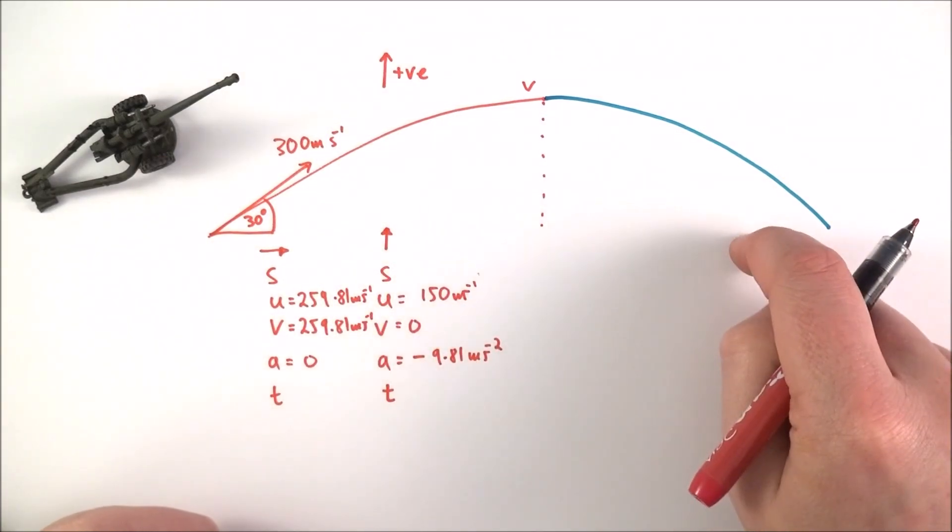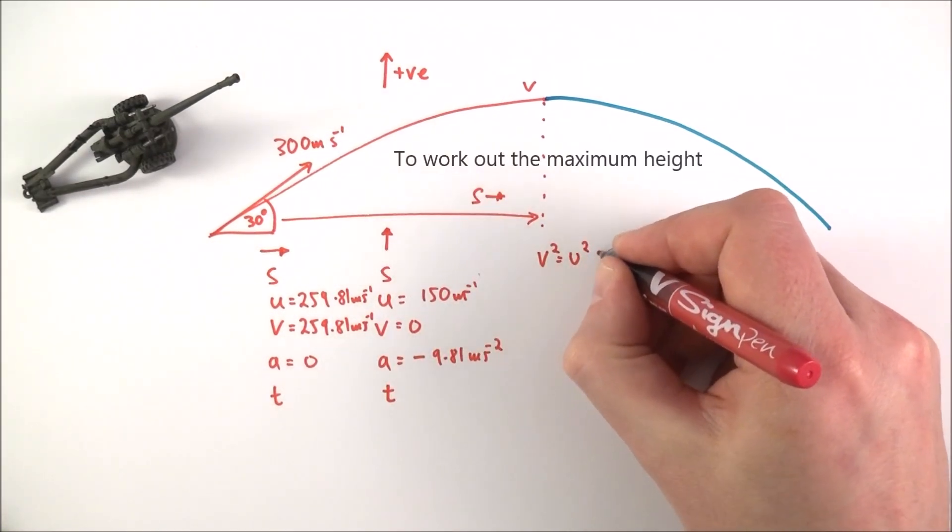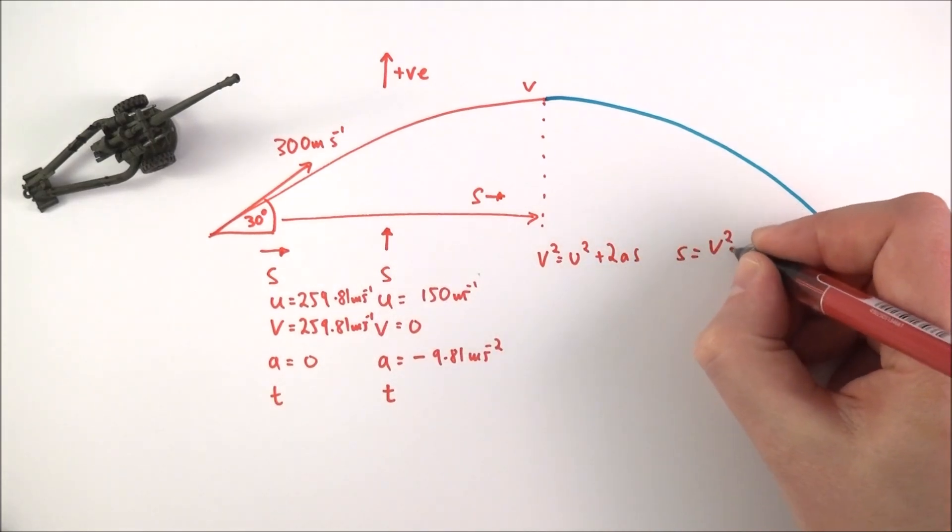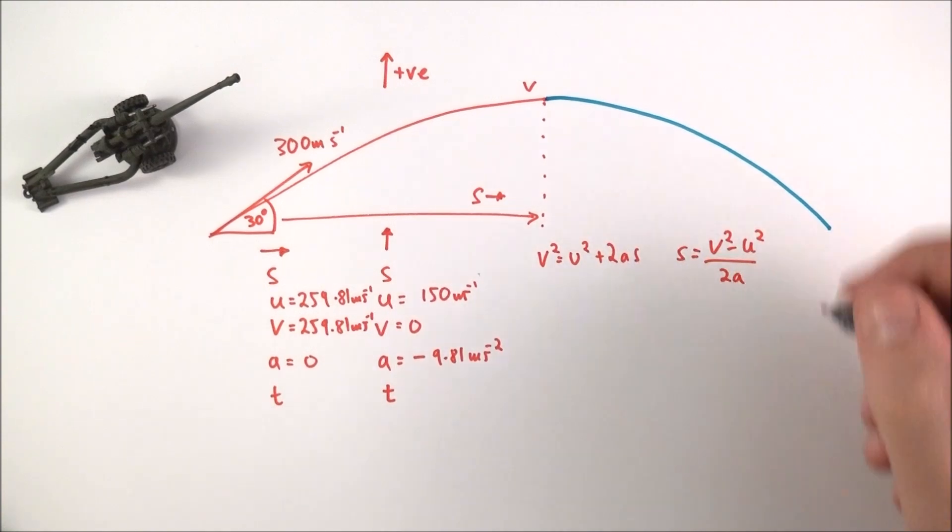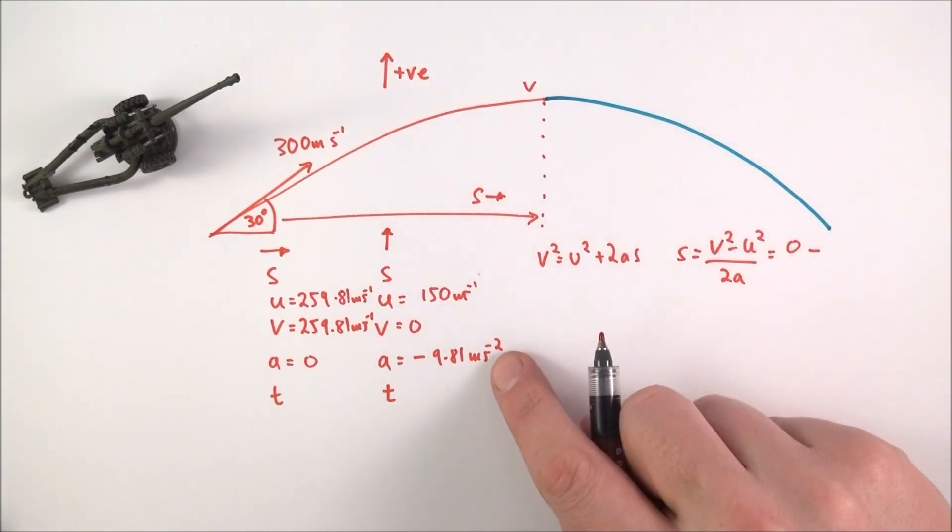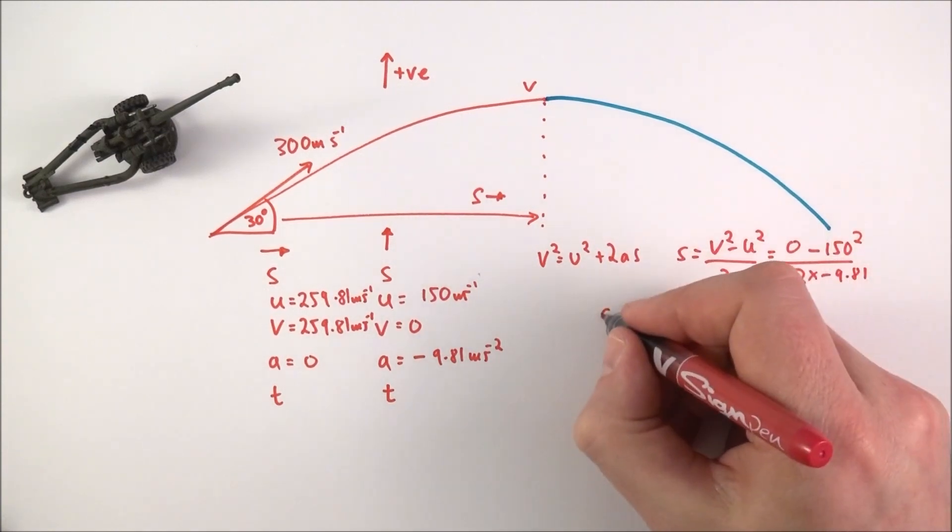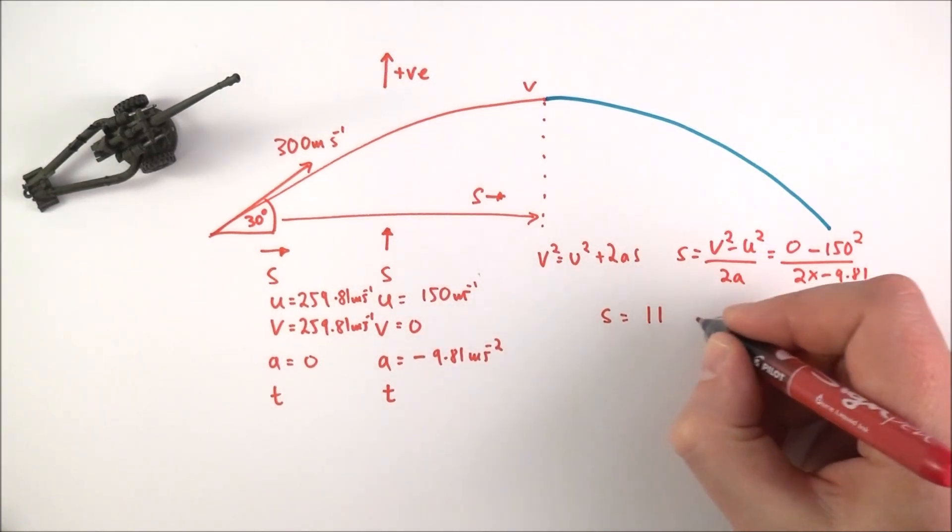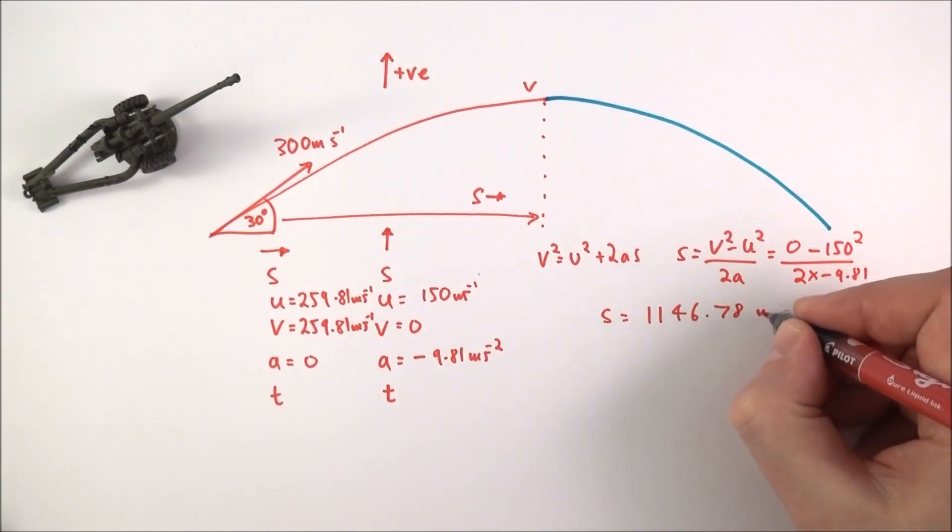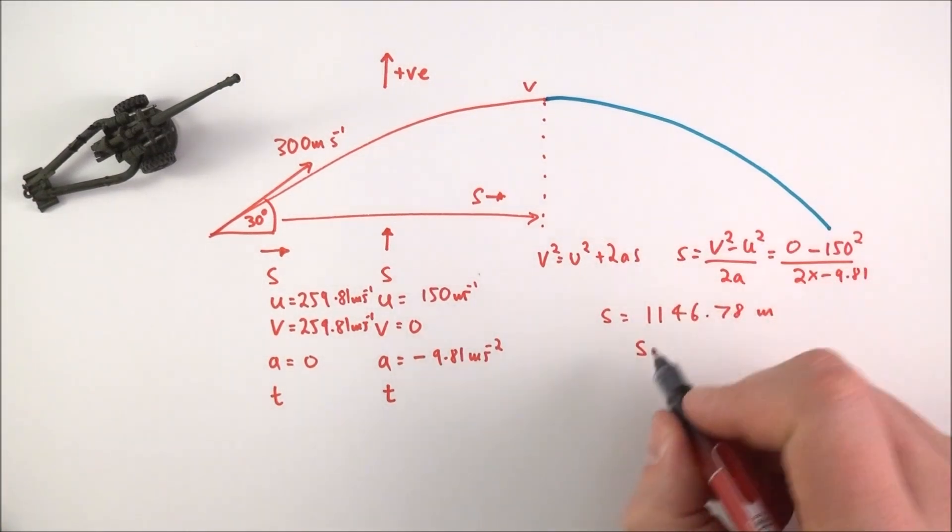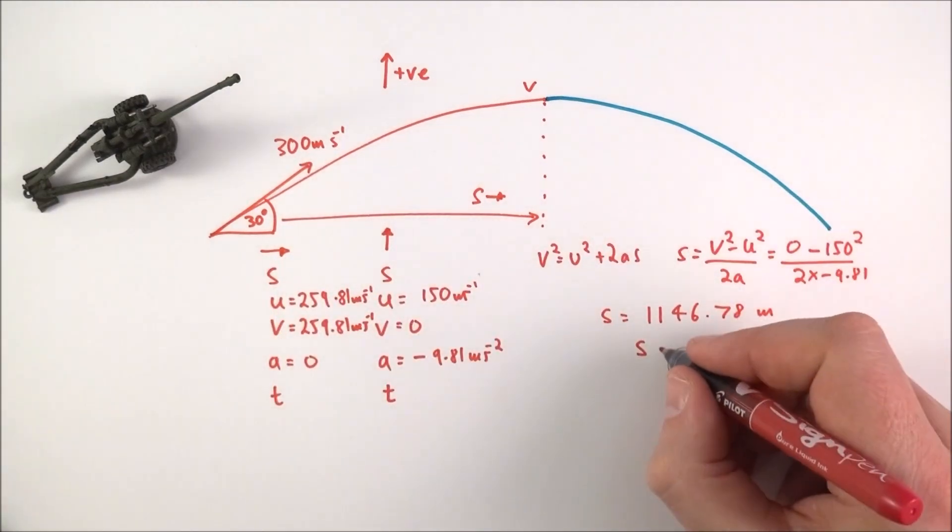From this information I can work out how far it goes, how high it goes, and how long it takes. v squared equals u squared plus 2as. If I rearrange to make s the subject, s equals v squared minus u squared over 2a. If I put the numbers in, the final velocity is zero, the initial velocity in the upwards direction was 150, divided by 2 times minus 9.81. The maximum height it reaches is 1146.79 meters.